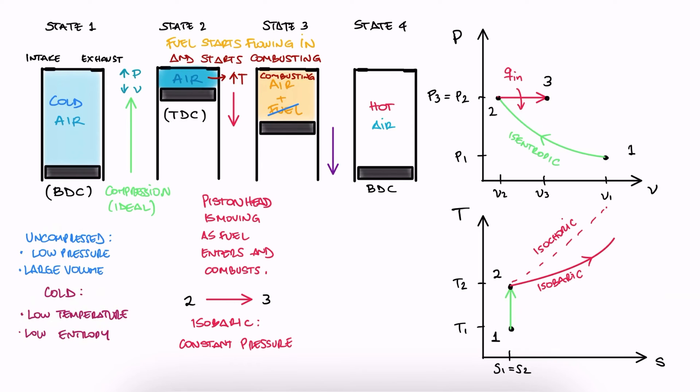The rest of the expansion happens between 3 and 4, which results in work out, and we assume it to be isentropic as well. And remember that from 4 to 1, we're substituting the flushing of exhaust gases and intake of fresh air as just air cooling down as heat is put out. This would still happen at constant volume, like in the auto cycle.